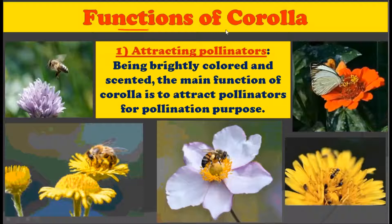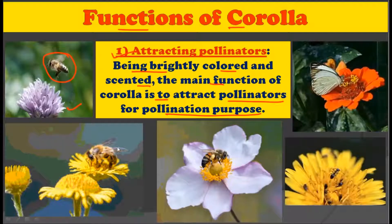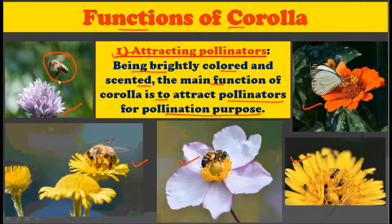Now let us talk about the functions of the corolla. The first and most important function is to attract pollinators for pollination. Being brightly colored and scented, the corolla attracts various types of insects and animals. In each picture you can see bright flowers attracting pollinators — this interaction results in pollination, followed by fertilization, and consequently the formation of fruits.